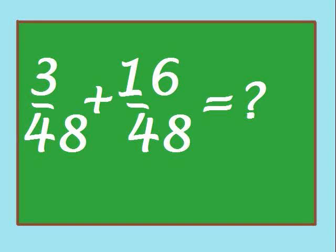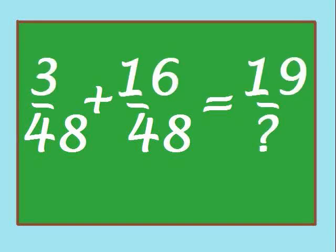Wow! Our whole problem has changed. Now we have three-forty-eighths plus sixteen-forty-eighths. Remember, numerator plus numerator, and bring the common denominator over, which gives us an answer of nineteen-forty-eighths.